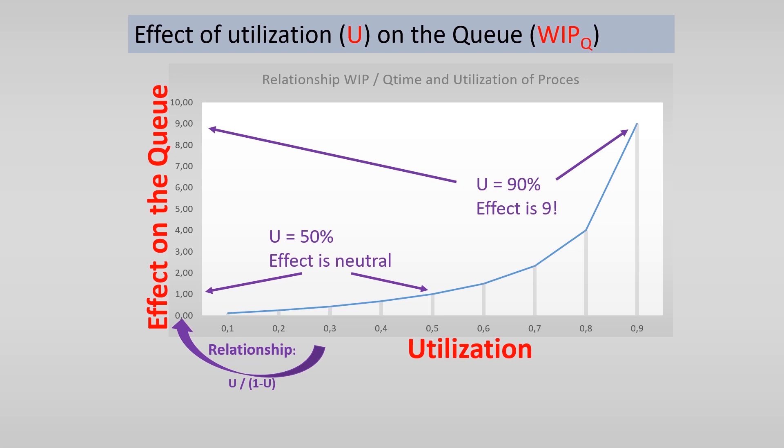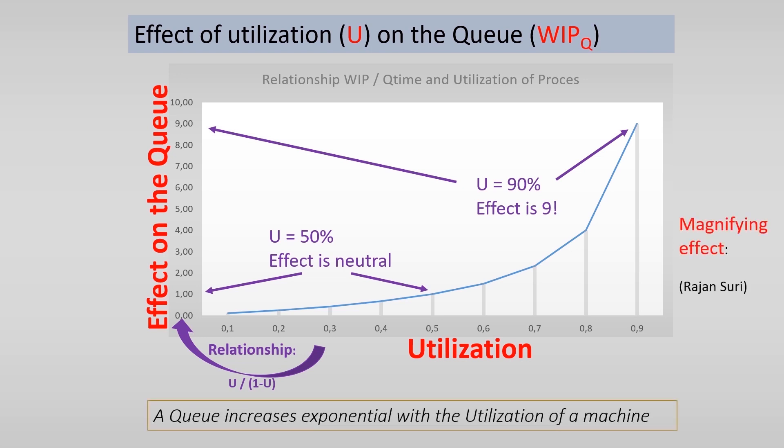Rajan Suri, the founder of the quick response manufacturing theory, called this relation between utilization and queue or waiting time the magnifying effect.